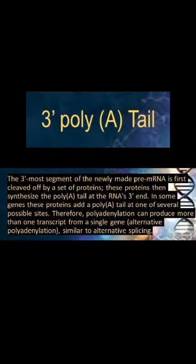The 3' most segment of the newly made pre-mRNA is first cleaved off by a set of proteins. These proteins then synthesize the poly A tail at the RNA's 3' end. In some genes, these proteins add a poly A tail at one of several possible sites. Therefore, polyadenylation can produce more than one transcript from a single gene — alternative polyadenylation — similar to alternative splicing. A poly A tail is added to an RNA transcript, typically a messenger RNA or mRNA. A poly A tail consists of multiple adenosine monophosphates; in other words, it is a stretch of RNA that has only adenine bases.